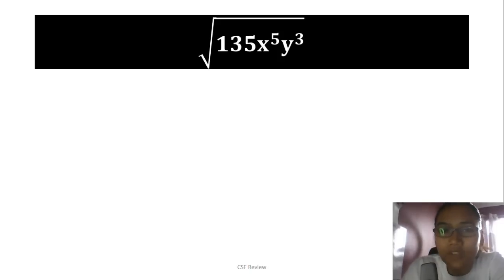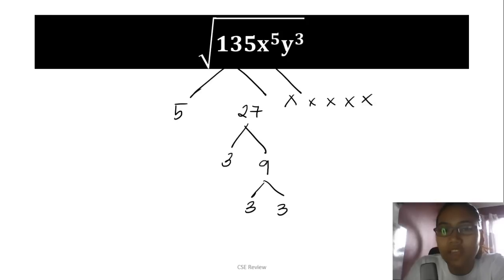Alright, let's see if you got it right. Square root of 135x⁵y³. What do you do? Same thing. Factor 135 into 5 and 27. 27 becomes 3 and 9, then 3 and 3. You have five x's: 1, 2, 3, 4, 5. And three y's: 1, 2, 3. I'm doing this visually so it's easier to understand. But when you're faster at this, basically you just divide 5 by 2. So 5 divided by 2 gives you 2 with a remainder of 1. That means you can extract 2 x's and leave one x inside. That's the concept.